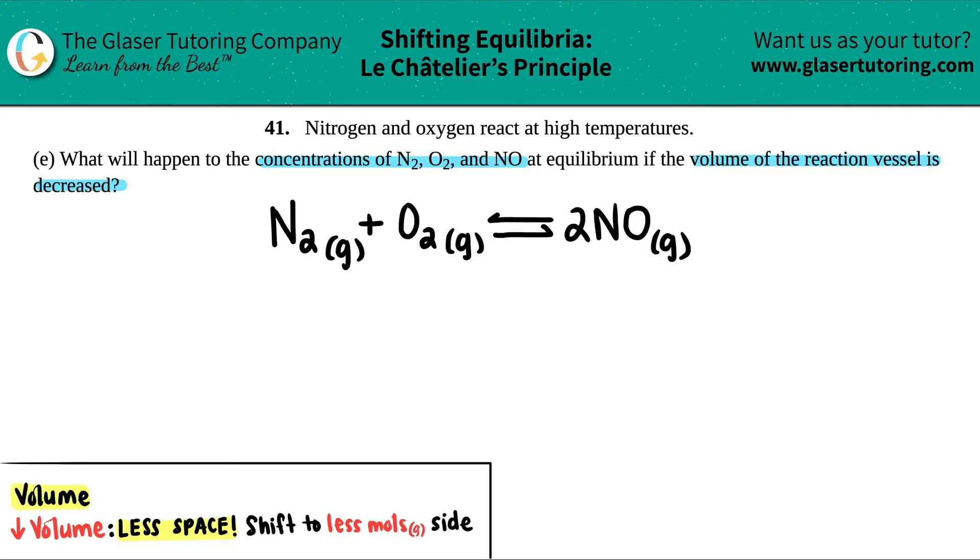So when that happens, you always shift to the less mole side. And it's always going to be just the less moles of the gas.